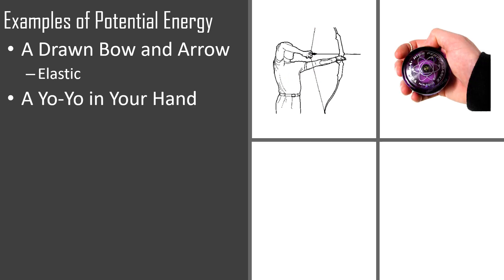Then we have a yo-yo that's in your hand — very specific on this example because it's in your hand, which means you're more than likely about to drop it. This would actually make it a gravitational potential energy example because it has energy since it's lifted up from the ground. We're not stretching or compressing anything like a spring.